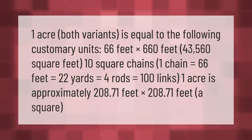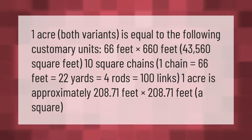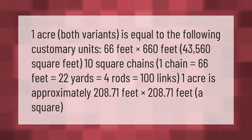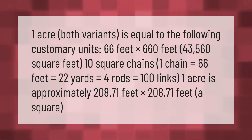One acre is equal to the following customary units: 66 feet times 660 feet equals 43,560 square feet, or 10 square chains. One chain equals 66 feet, equals 22 yards, equals 4 rods, equals 100 links. One acre is approximately 208.71 feet times 208.71 feet as a square.